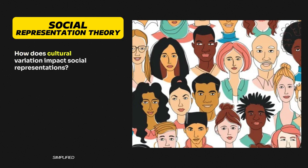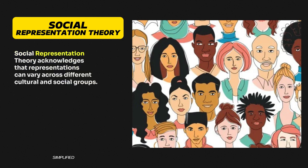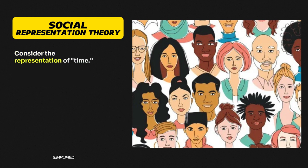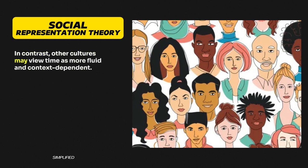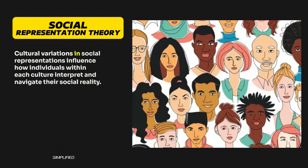Question 7: How does cultural variation impact social representations? Social Representation Theory acknowledges that representations can vary across different cultural and social groups. Consider the representation of time. In some cultures, time is perceived as linear and strictly organized, emphasizing punctuality. In contrast, other cultures may view time as more fluid and context-dependent. Cultural variations in social representations influence how individuals within each culture interpret and navigate their social reality.